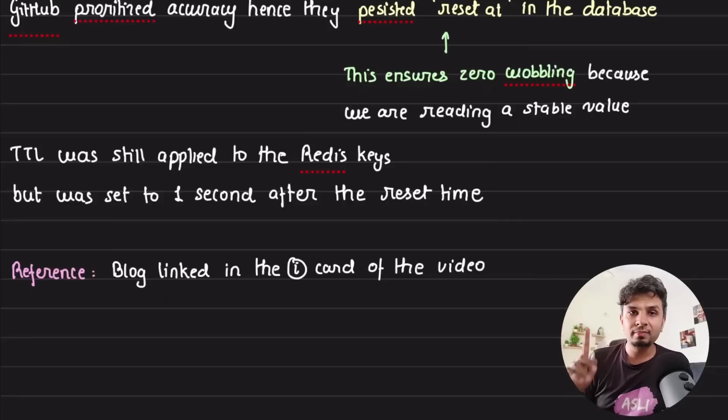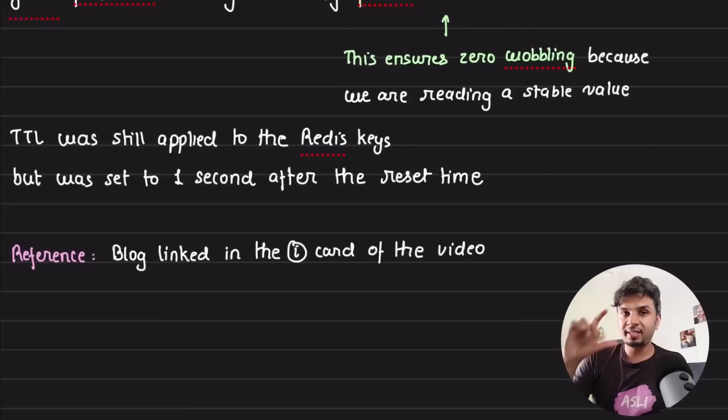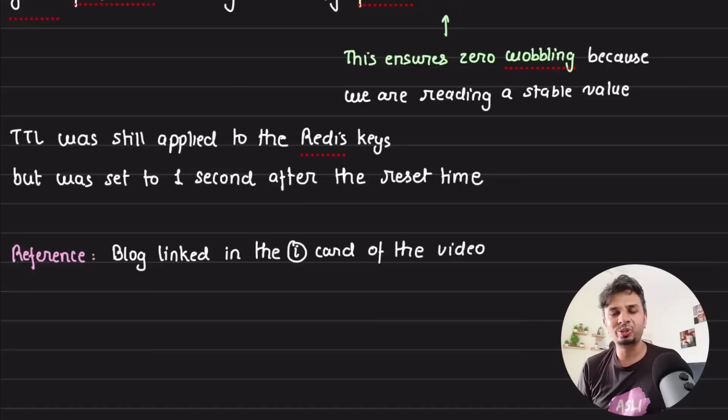Now this is all taken again, this is all taken from GitHub's engineering blog. I absolutely loved going through it. Their blog also contains the entire Lua script. It contains one more bug that they faced and how they fixed it. It's very similar to this bug, and I've linked it in the i-card in this video. So tap on the i-card, go through the blog. You will absolutely have a blast going through it. And yeah, when I read it, pretty amazing stuff, and I absolutely loved going through it. So I hope you found it interesting. I hope you found it amazing. That's it for this one. I'll see you in the next one. Thanks for your time.